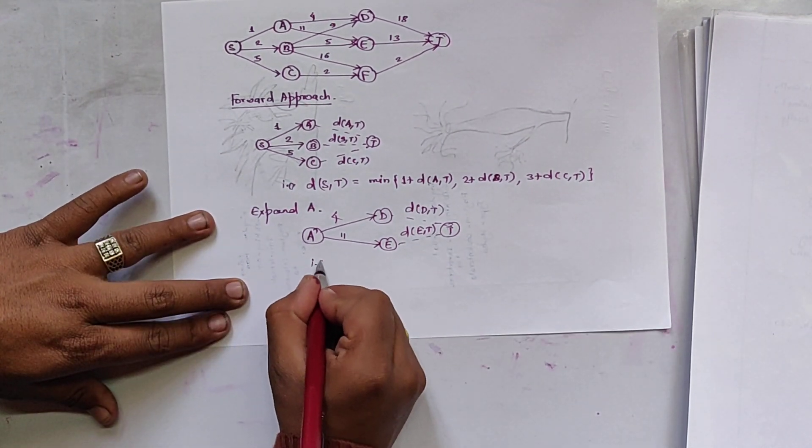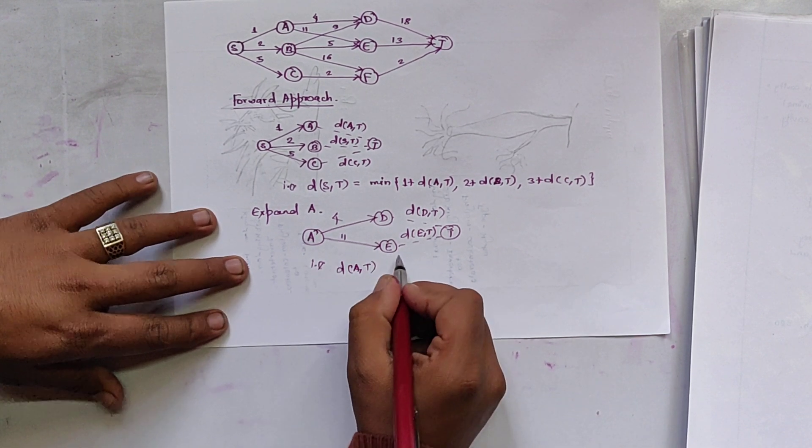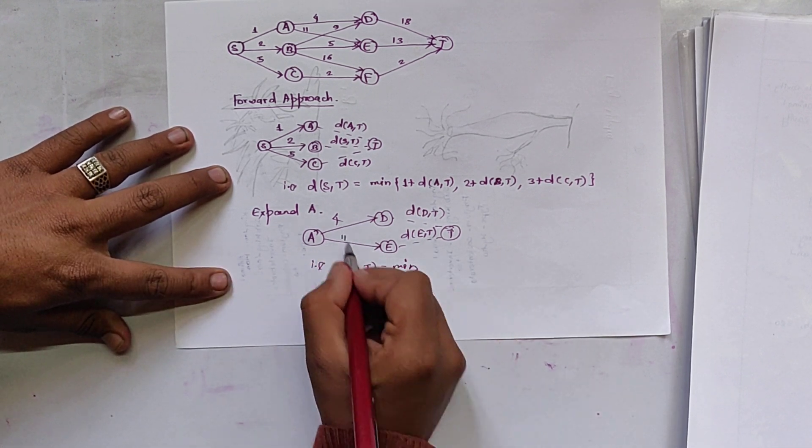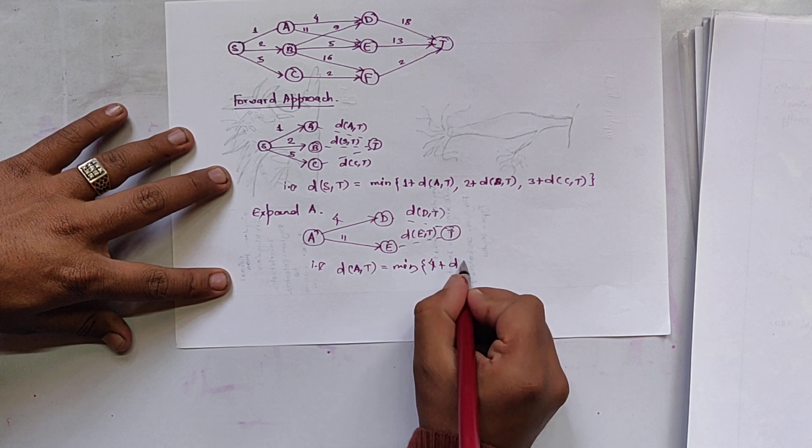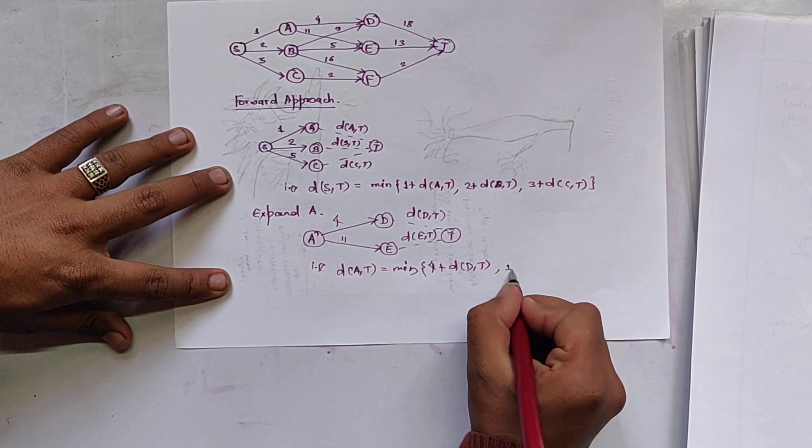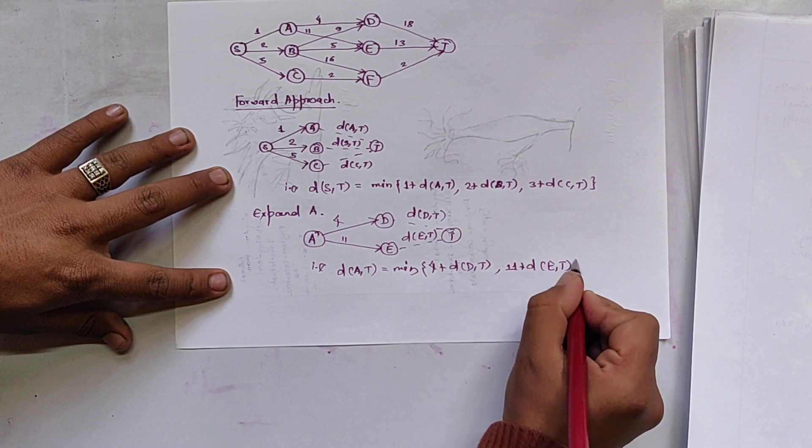Similarly, that is DAT is equal to minimum value. Since there are 2 paths, so we use minimum value. 4 plus DDT and 11 plus DET. We have to find value of DDT as well.